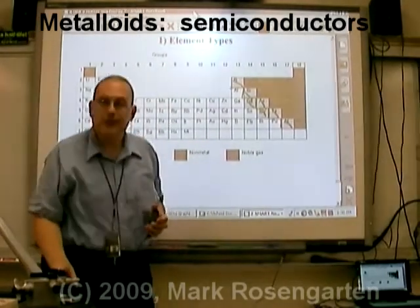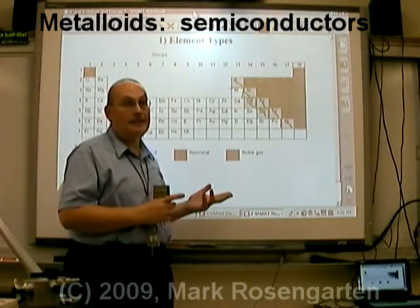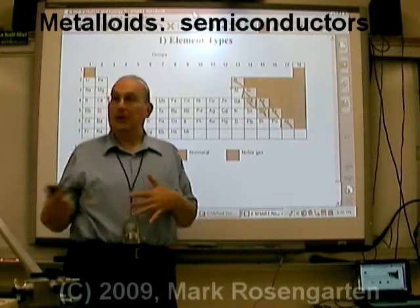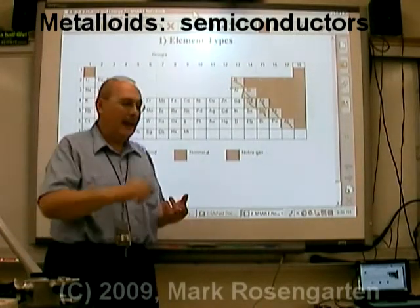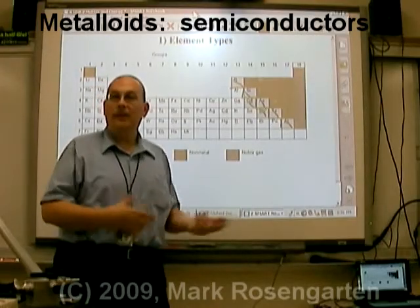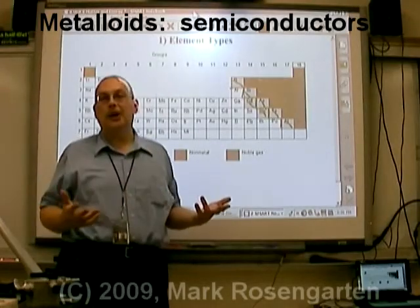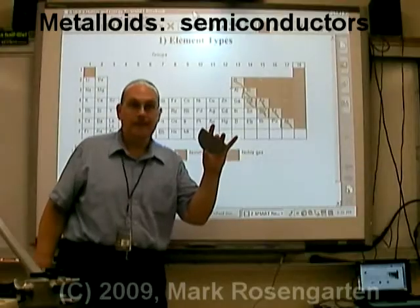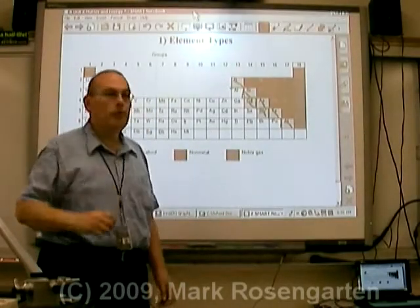Metalloids are called semiconductors — given certain circumstances, sometimes they conduct electricity and sometimes they don't. This is why they make excellent transistor material: they can act as on/off switches. When they conduct it's on; when they can't conduct it's off. Off and on translates to zeros and ones of binary code, which is used in computers — which is why metalloids like silicon are so useful in the computer industry.